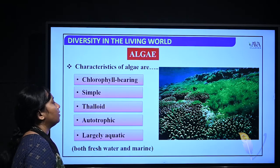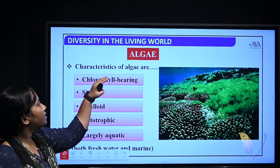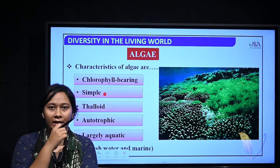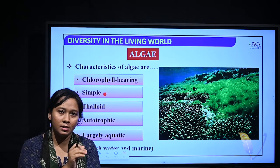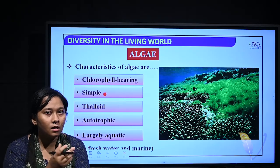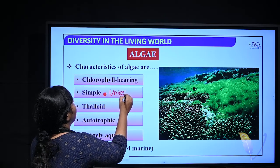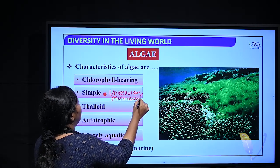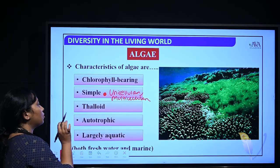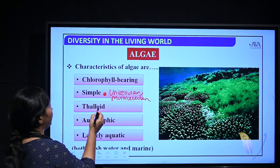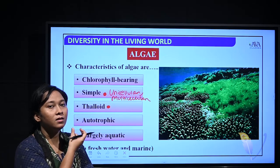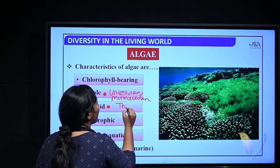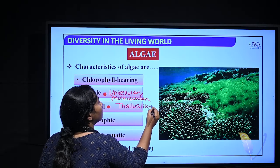Let us see each characteristic of algae. They are generally simple, lower organisms — unicellular (single cell) but sometimes also multicellular. They have a thalloid structure. Why is the term 'thalloid' used here? Thalloid means they have a thallus-like structure.